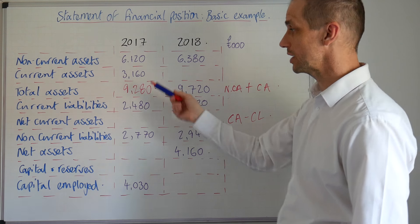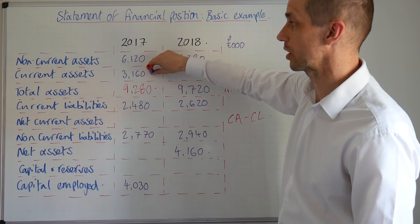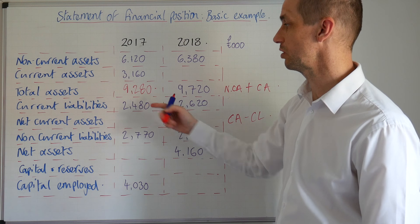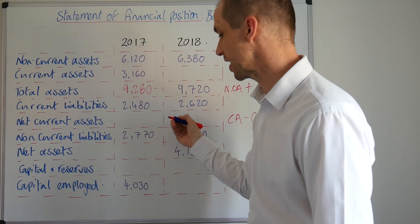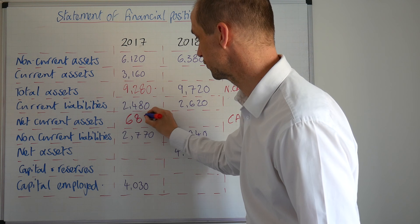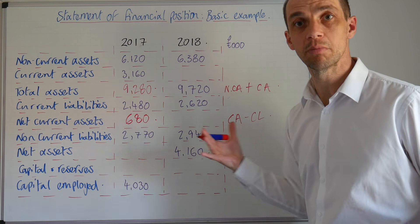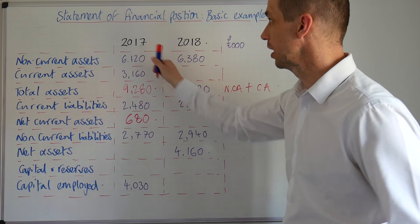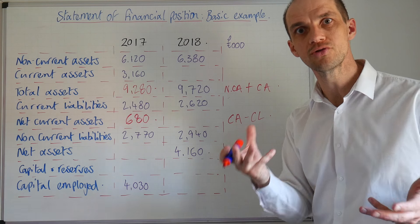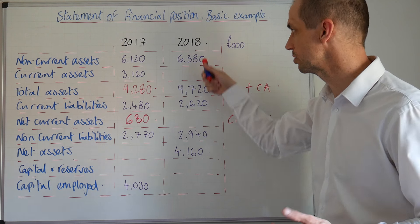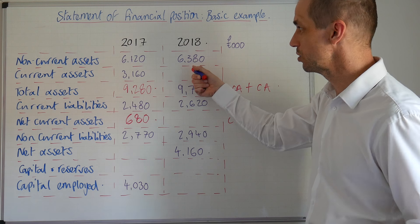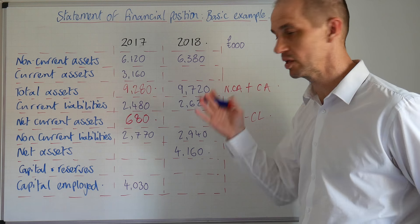Running through that, we can see we've got current assets of 3,160 minus 2,480 for current liabilities. That gives us a figure of 680, so we can pop that one in. Let's get 2017 rounded off, and then you should be okay with completing 2018 yourself.